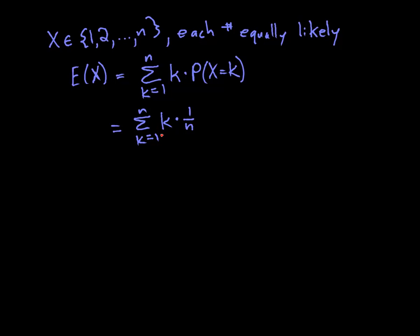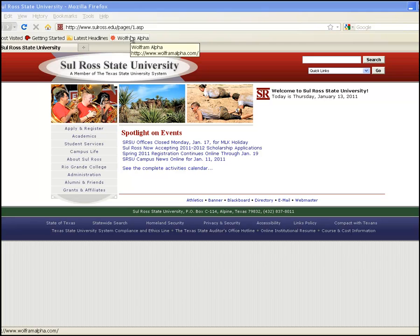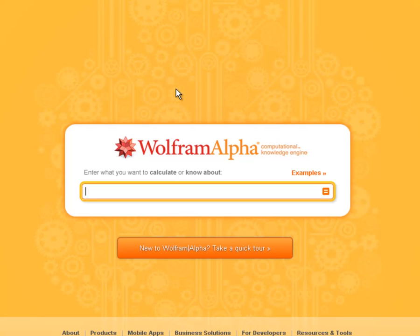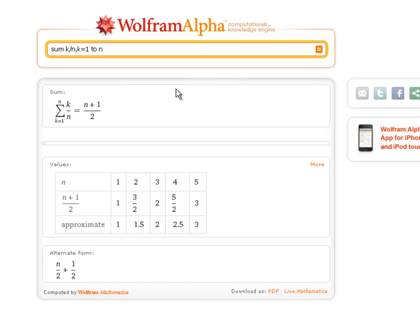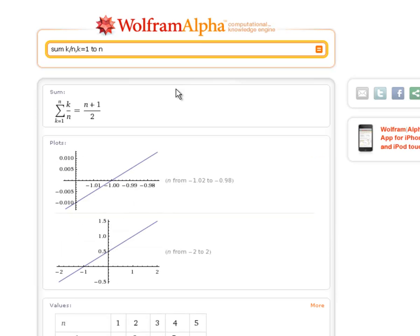To find this value, we are going to use Wolfram Alpha. We're doing the sum of k times 1 over n. So I'll just write that as k over n. And we're summing from k equals 1 to n. Press enter. And that shows me that this expectation is n plus 1 over 2.